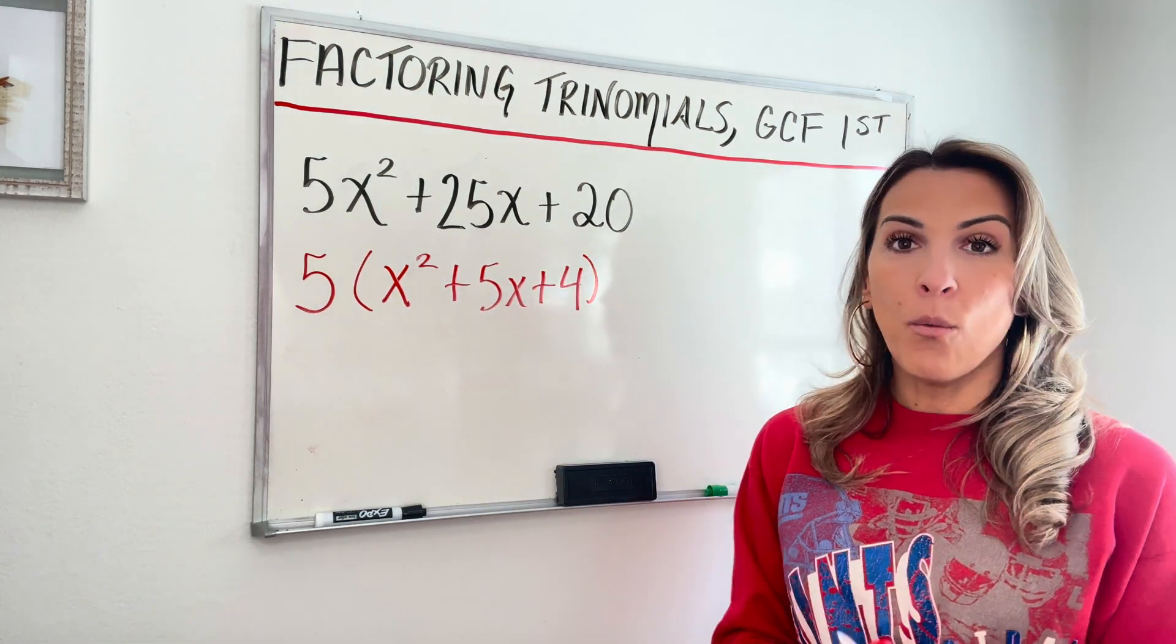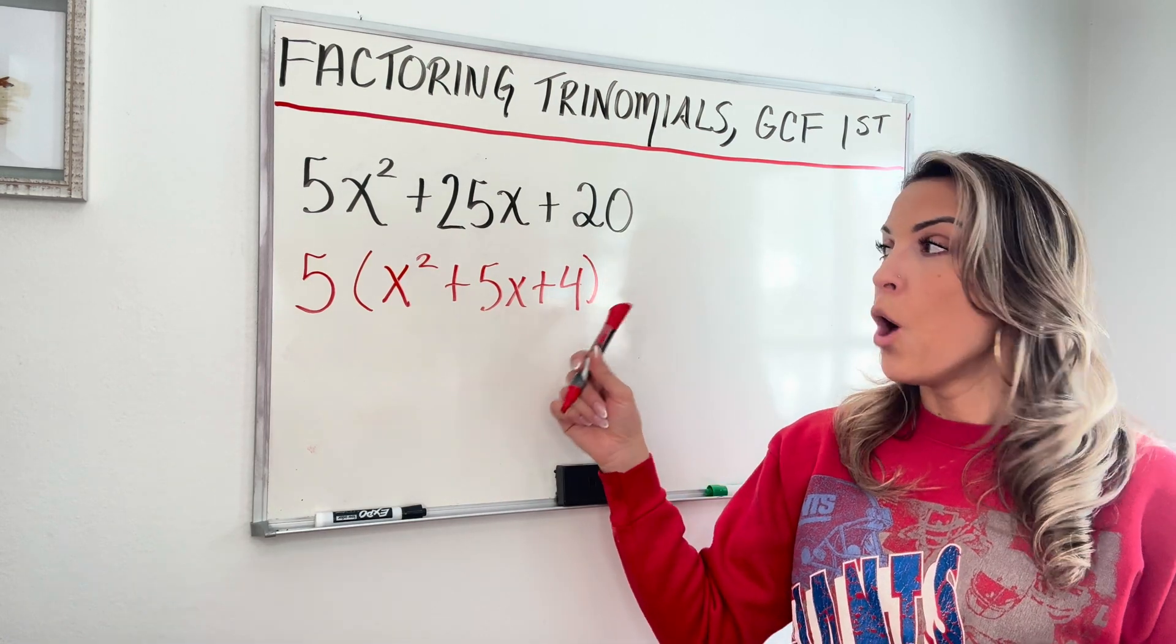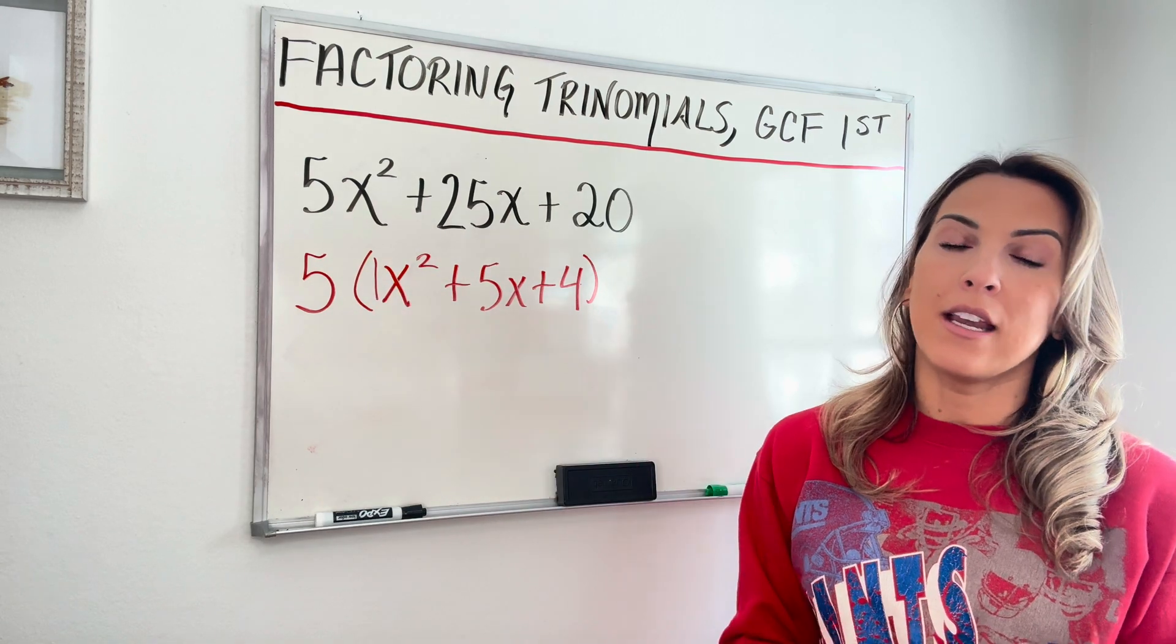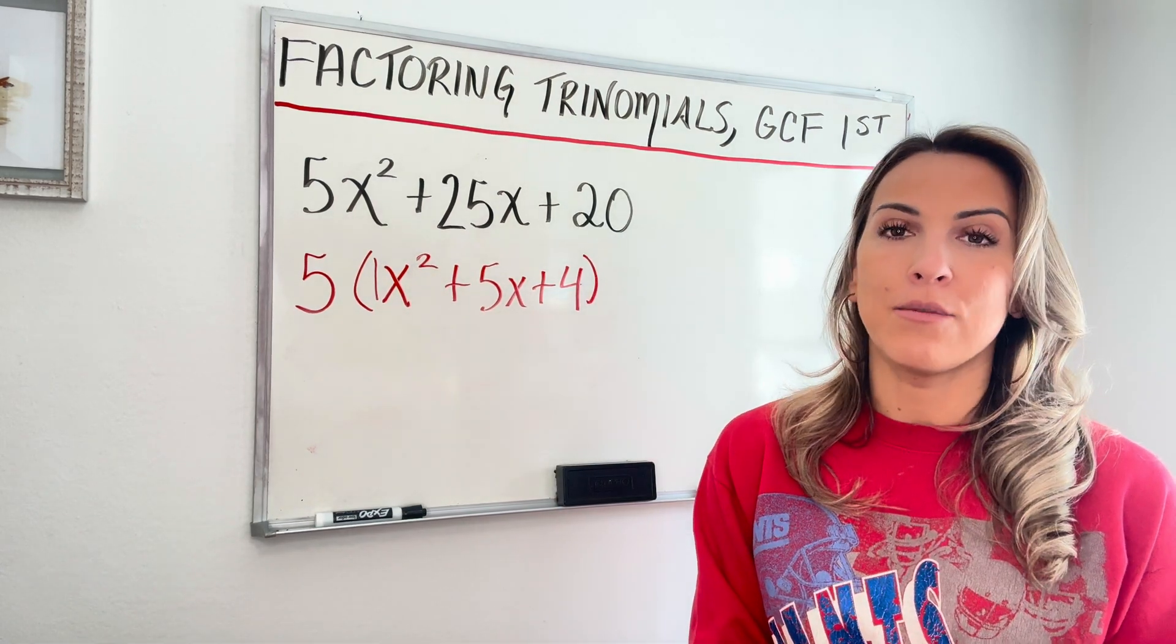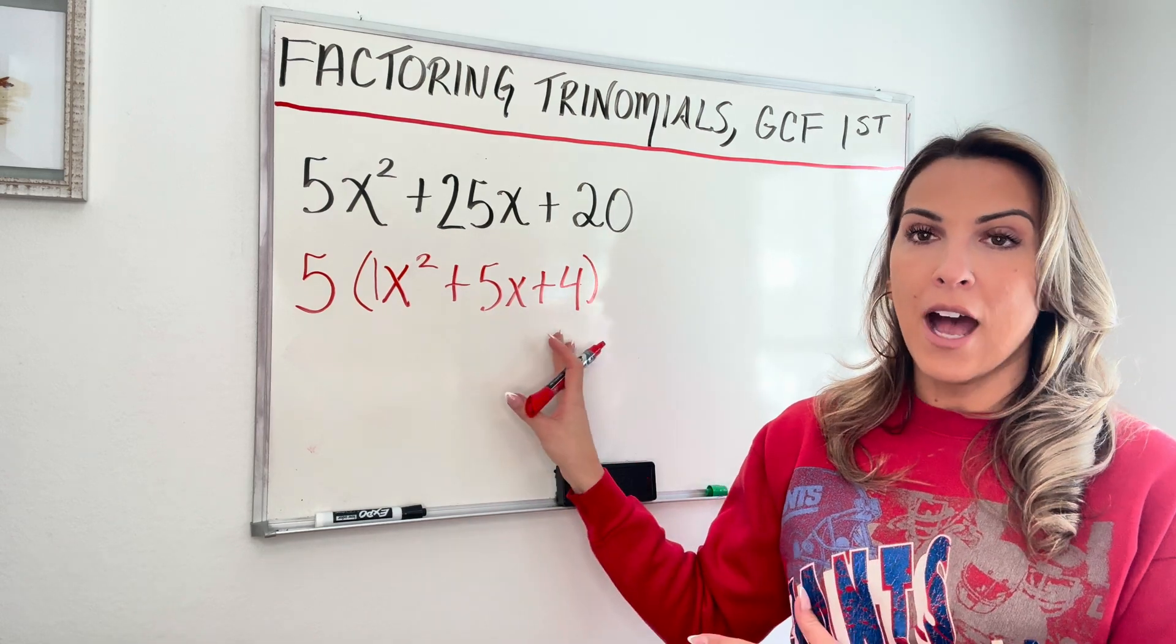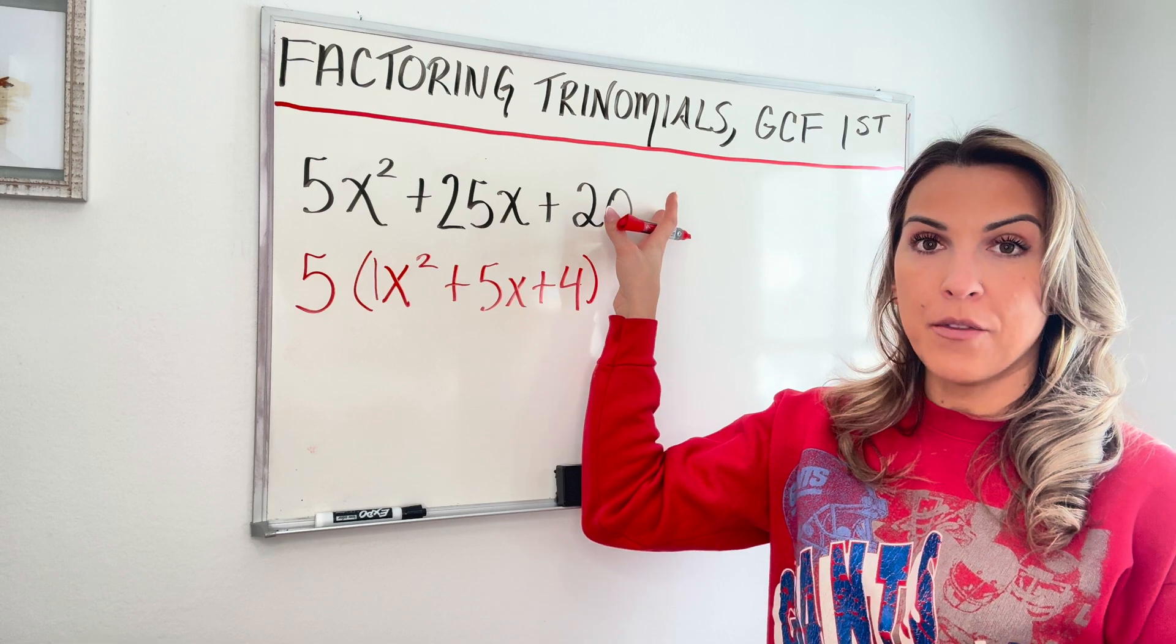Now what I've achieved is I've gotten an expression inside the parentheses that's a trinomial where A, the leading coefficient is one. So again, if you learned or watched the past video and you know how to factor trinomials where A equals one, now this seems like a much more doable problem than this one. So we factored out the GCF first.